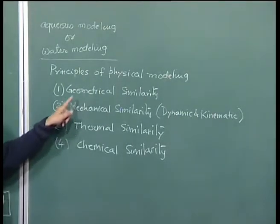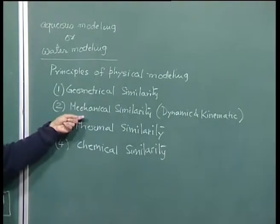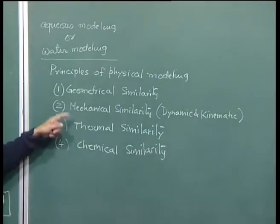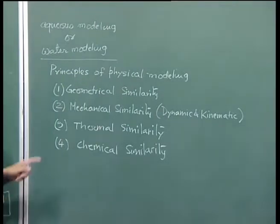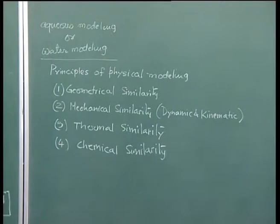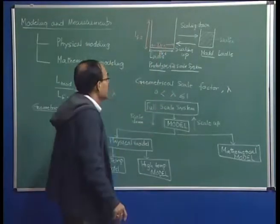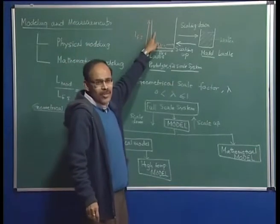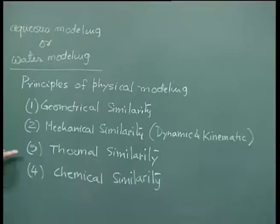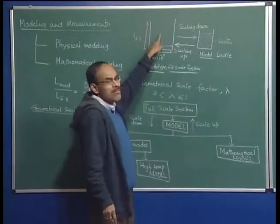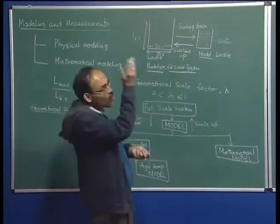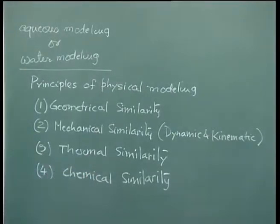For example, if we treat molten steel as essentially isothermal, there is no scope for thermal similarity. Similarly, if we are studying inclusion flotation with no significant chemical reaction, chemical similarity does not come into play. These first two — geometrical and mechanical similarity — are always encountered, while the others apply in specific cases. The ordering is very important and should not be interchanged.